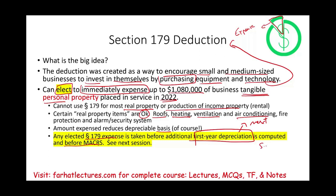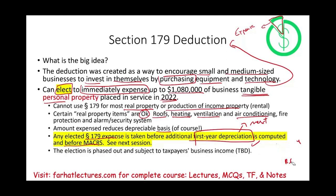Here's the order: first you take Section 179, then you take the additional first-year depreciation, then MACRS. We already covered MACRS, now we're covering Section 179, and in the next session we'll cover first-year depreciation. The election is phased out and is subject to two limitations — specifically taxpayer business income. So not every penny you spend you can deduct. The two limitations are: how much asset you purchased for that year, and what is your taxable income.